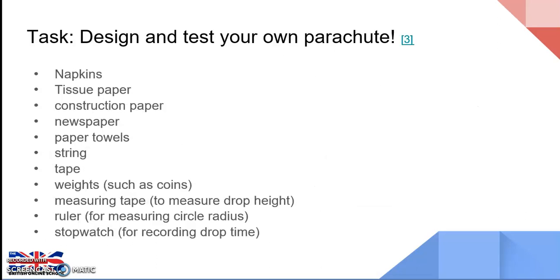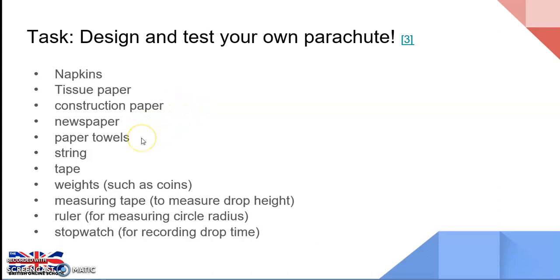Today you're going to get to do some practical science at home, designing and testing your own parachute. Most of the items needed can be found at home or substituted with alternatives. We can use different types of paper or material to make the parachute fabric itself — suggestions are napkins, tissue paper, construction paper, newspaper, or paper towels. Any flexible, lightweight material could be used.